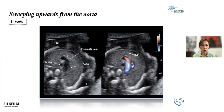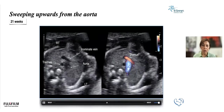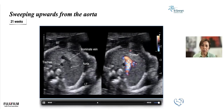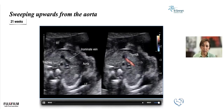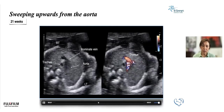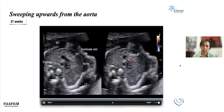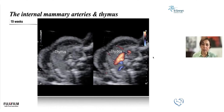Sweeping a little more superior from the three vessel trachea view, we can still see the aortic arch but we're now seeing the nominate vein, which normally runs above the level of the transverse arch. The trachea is clearly seen in this fetus. We see flashing of some vessels surrounding the thymus — these are the subclavian arteries. The internal mammary arteries originate from the subclavian arteries and delineate the thymus. This has been described as the 'thymus box,' which is an important structure to visualize in cases of arch abnormalities.